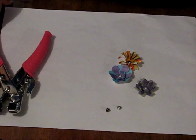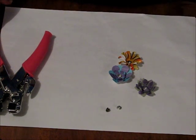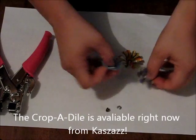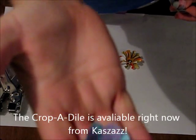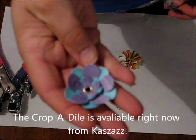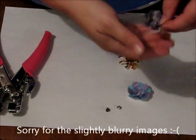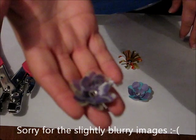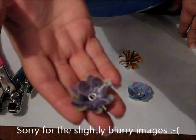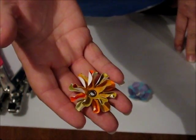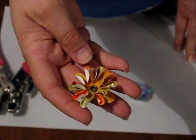I just wanted to show you a couple of flowers that I've made using the Crop-A-Dile to set some eyelets in the centre of them. So this is one of the flowers I've made, just a simple punch flower with the eyelet in the middle. This one here is using vellum, and again with the eyelet in the middle. And this one here is a bit more of a scrunched flower with the eyelet in the middle.